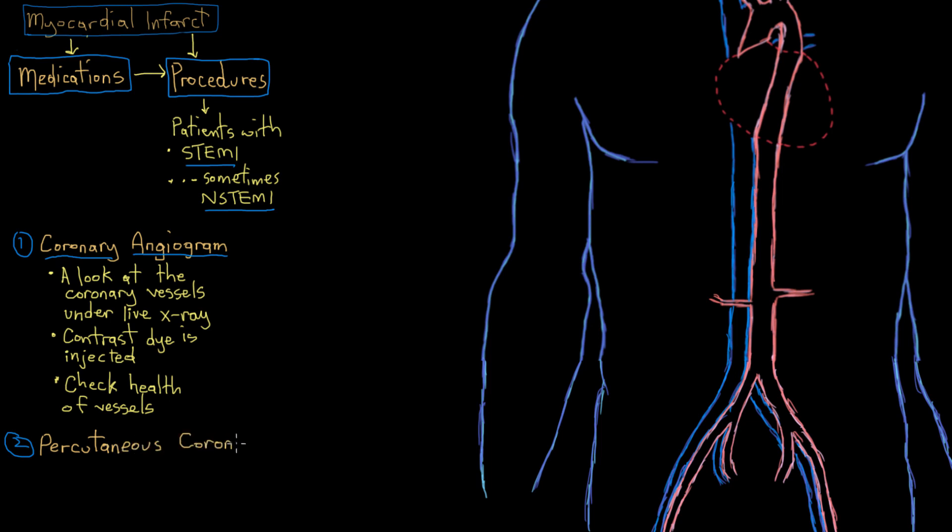Percutaneous coronary intervention, or PCI, is where a doctor will insert a catheter. So here I'm drawing a catheter now, this purple thing. So this is actually a wire-like tube that a doctor will thread into your femoral artery, or sometimes some other arteries, but usually the femoral artery. So he'll thread it into your artery and thread it up to your heart and into your coronary vessels.